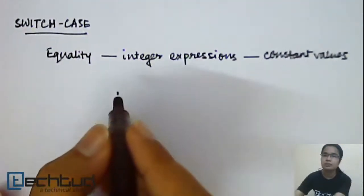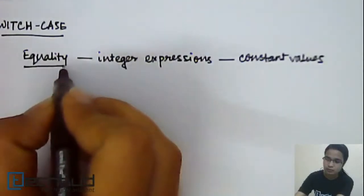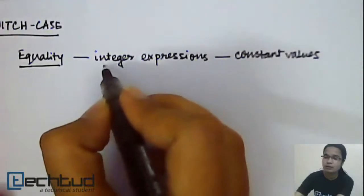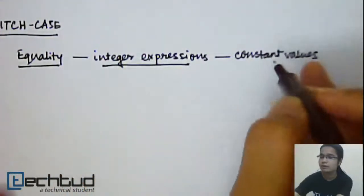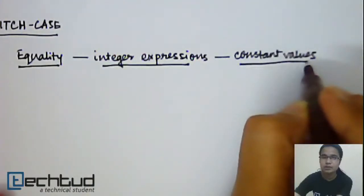So remember these three points. First of all, only you can check for equality. Second, integer expressions. Thirdly, you can only check the equality with constant values.